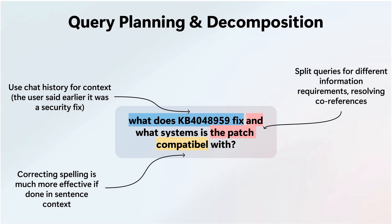Agentic retrieval excels at handling typos, co-references, and implicit context by reformulating and splitting complex user queries into smaller, stand-alone searches. In multi-turn conversations, context from prior interactions helps disambiguate and guide retrieval toward the most relevant knowledge. This method yields more accurate, contextually grounded answers than conventional search.